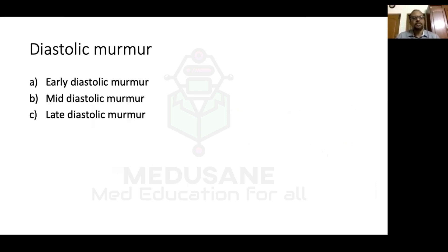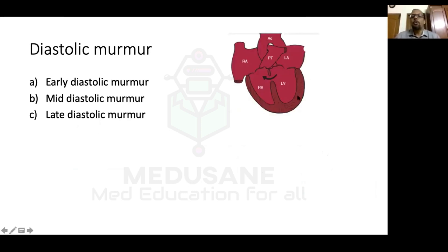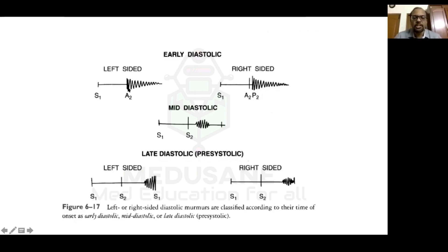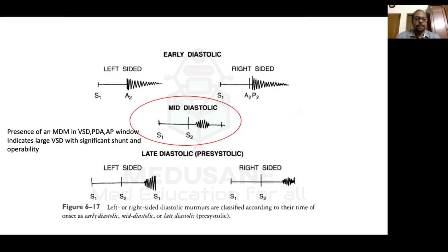Diastolic murmurs are of three types: early diastolic, mid-diastolic, and late diastolic. Our patient had a mid-diastolic murmur at the apex. In a large VSD, a large amount of blood returns from pulmonary veins to the left atrium and flows across the mitral valve to the left ventricle, creating a physiological mitral stenosis effect — hence a mid-diastolic murmur at the apex. The presence of a mid-diastolic murmur at the apex in a shunt lesion like VSD, PDA, or AP window indicates a large, significant shunt requiring treatment — either surgery or device closure. Early diastolic murmur starts with S2 as in aortic regurgitation; late diastolic murmur is present in mitral stenosis along with the opening snap.